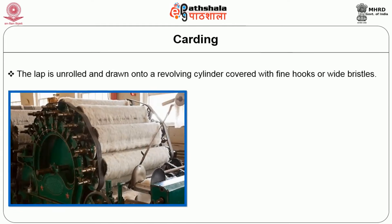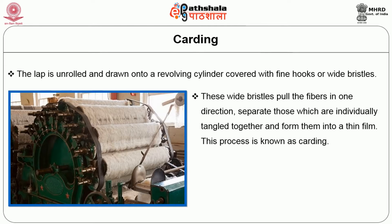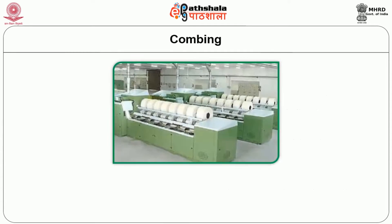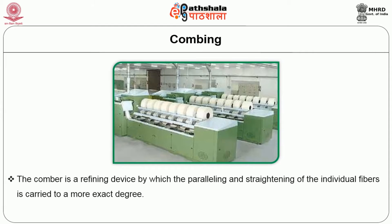In carding, the lap is unrolled and drawn onto a revolving cylinder covered with fine hooks or wire bristles. These wide bristles pull the fibers in one direction, separate those which are individually tangled together and form them into a thin film. This process is known as carding. The thin film is drawn into a funnel-shaped opening which molds it into a rope-like strand approximately an inch in diameter, which is called a sliver.